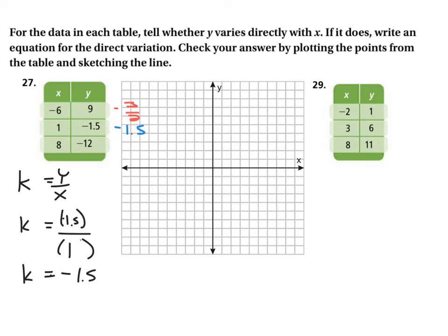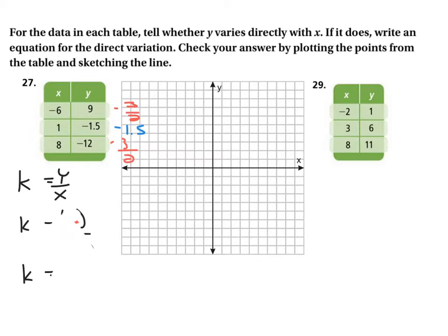Let's try it one more time with the last set. We plug in negative 12 over 8. Negative 12 over 8 — divide both by 4 and we get negative 3 over 2. We're getting the same value each time, which is a good sign. That means we're dealing with a direct variation situation.